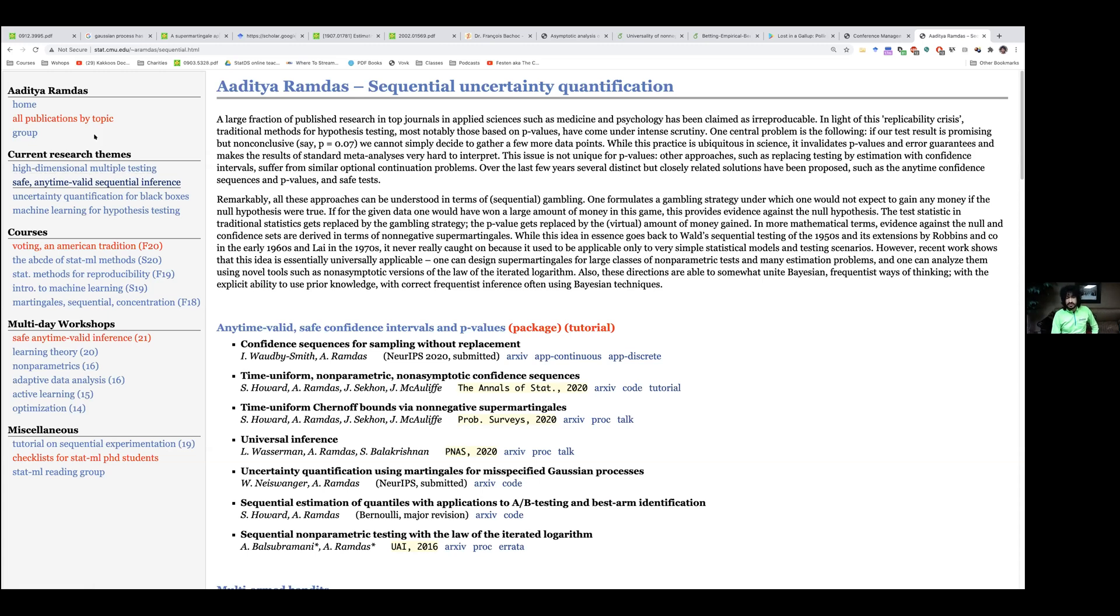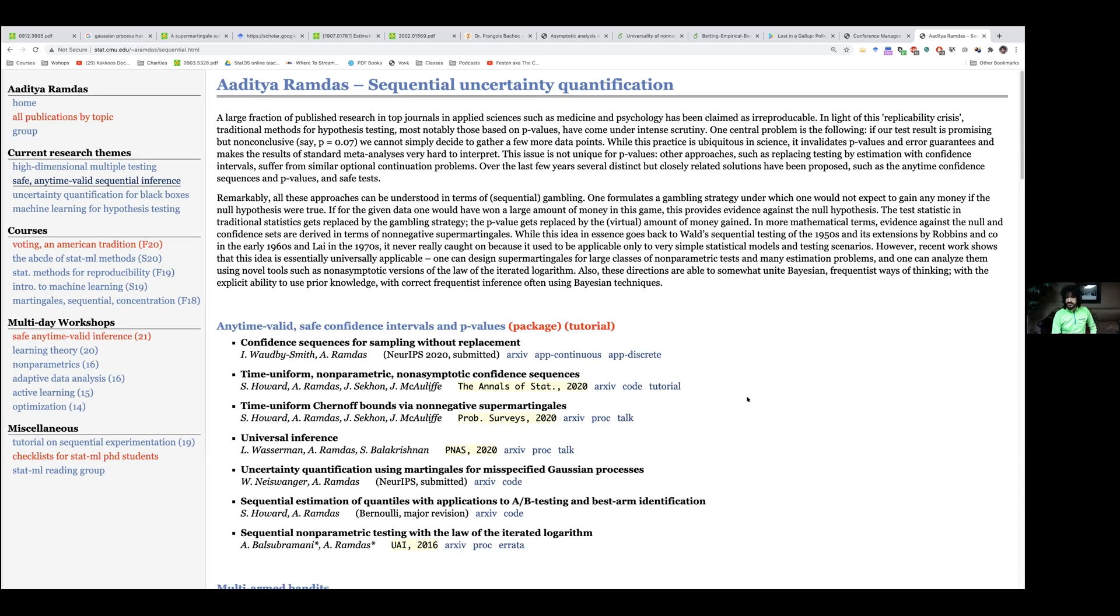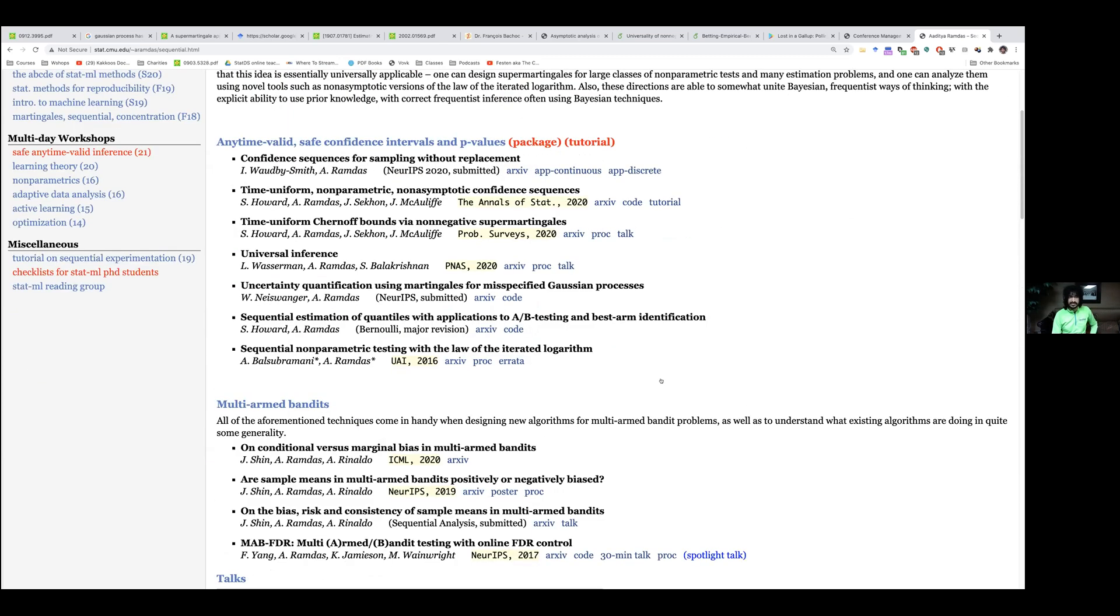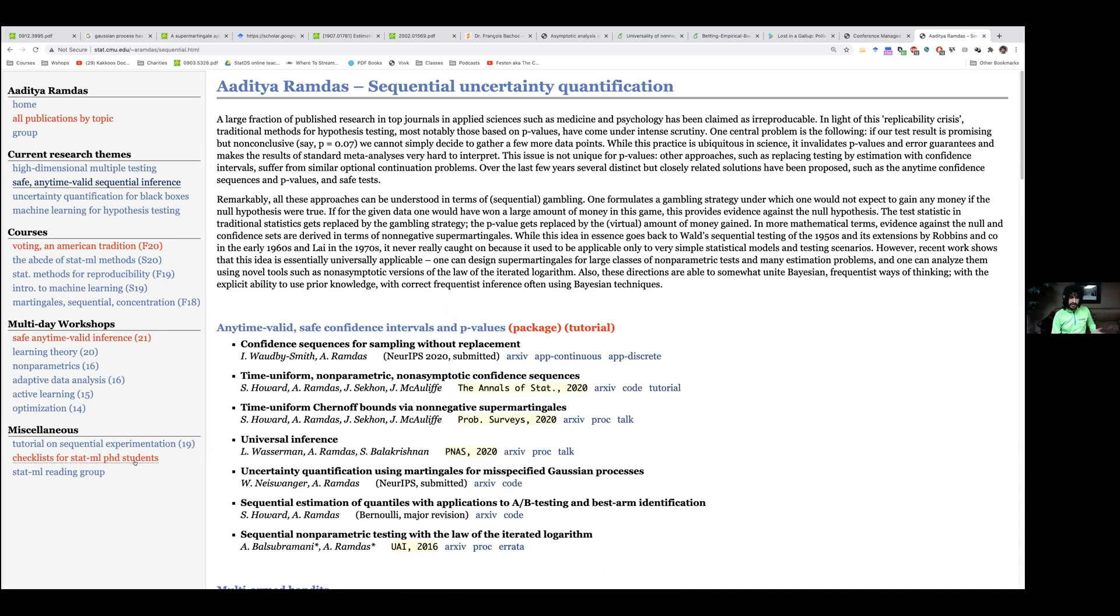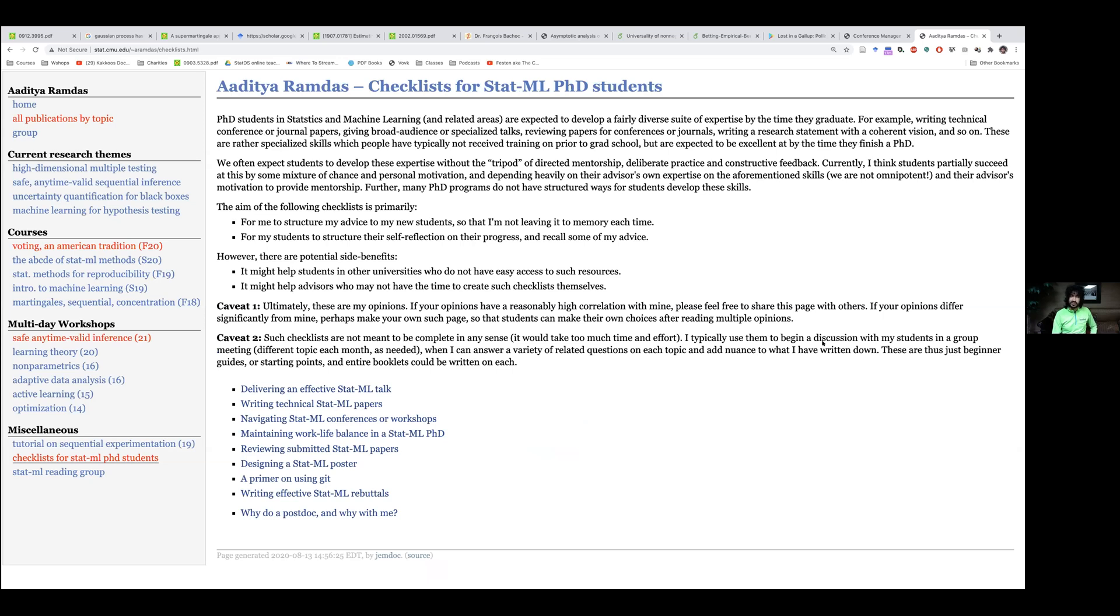So that's the research themes. Each of them has a little blurb on the top and some set of papers. They all have talks that you can go and listen to and see if you're actually interested in any of this. A few things I'll point out before finishing, I maintain a set of checklists for PhD students. These are really guidelines that I give my own PhD students. They're really honestly for me to remember things that I want to tell my students and for my students to remember six months later, what I actually told them, but it's up on my website in case it's helpful to anybody else. So these are just one page blurbs about how do you give an effective talk? How do you write a paper? How do you review papers? How do you maintain your work-life balance and how do you write rebuttals and just things of that nature? So some of you might be interested in some of these.